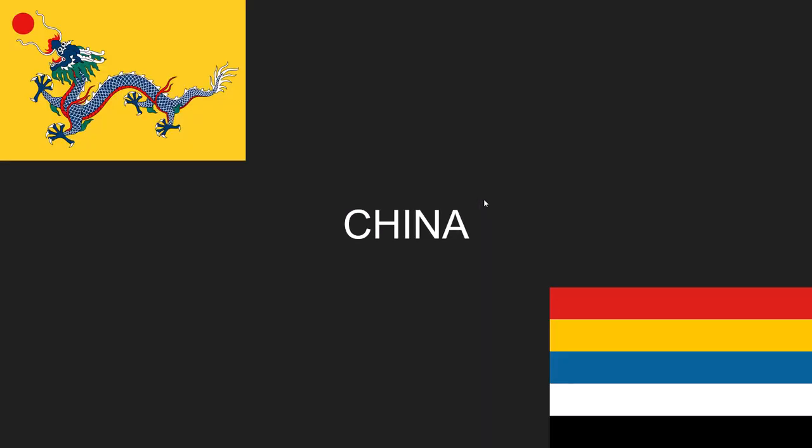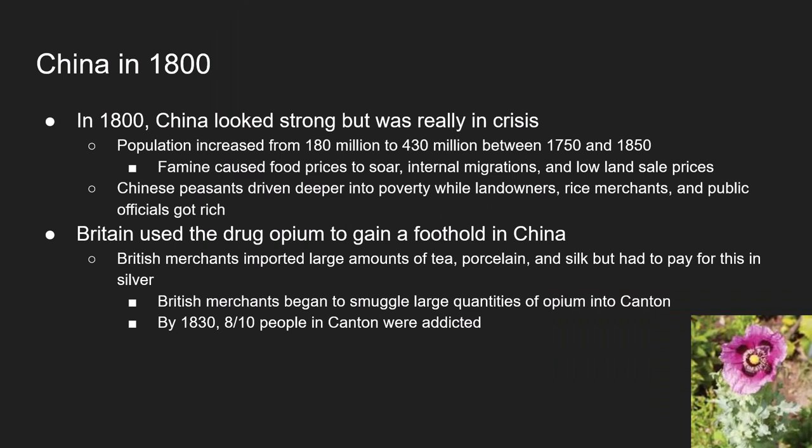Let's get started. First topic is China. When we look at China in the year 1800, it looks like a really strong civilization, but in reality China is in the middle of a crisis. Between 1750 and 1850, the population increased from about 180 million all the way up to 430 million. This is going to cause famine — there's not enough food for everybody. Food prices soar, peasants move around hoping to find food, landowners are forced to sell land far below value, and Chinese peasants are driven deeper into poverty while the rich grow even richer.